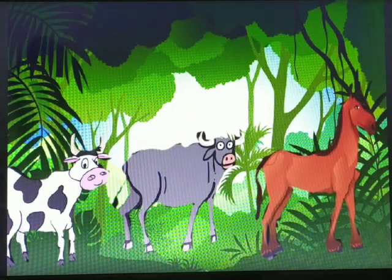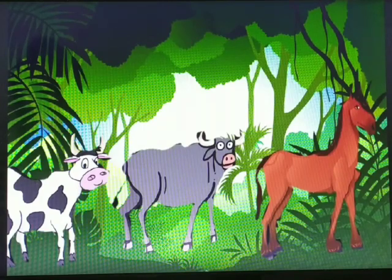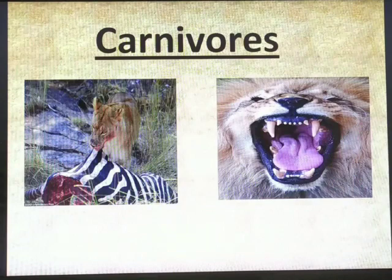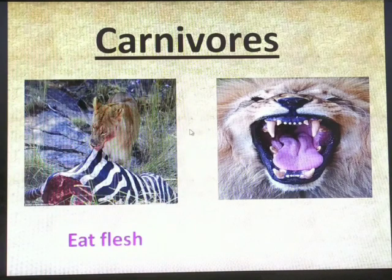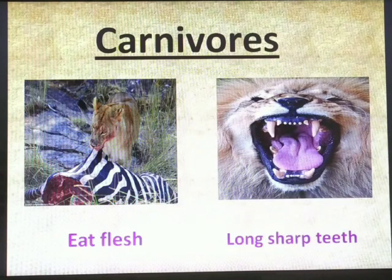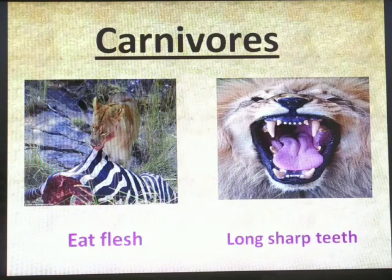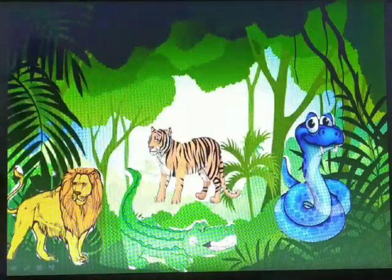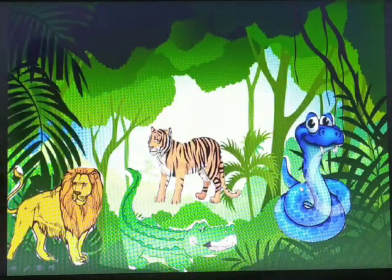Common examples of herbivores are cow, buffalo, horse, and many other such animals. The next category is carnivores. These are opposite to herbivores — carnivores are animals which feed upon the flesh of other animals. Their side teeth are very long and sharp, because they have to tear flesh. You might have seen lions and tigers; they all have very long and sharp teeth.